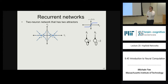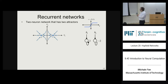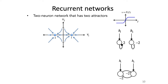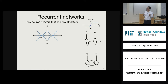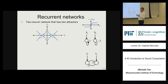A student asks whether the attractors are determined by the nonlinear activation function. Yes — if the activation function saturated at 2 and minus 2, those would be the attractor values. This network has two eigenvalues: if we think of it as a linear network, the connection matrix is diagonal with 2 and minus 2 along the diagonals.